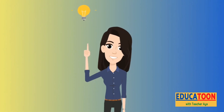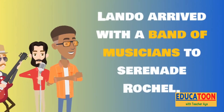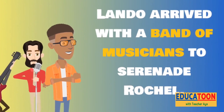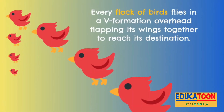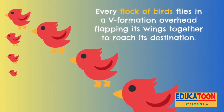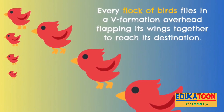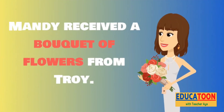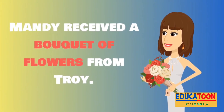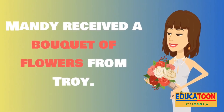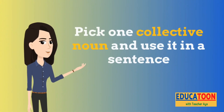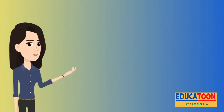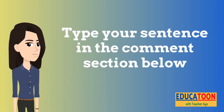Let's try to use some of them in a sentence. Every flock of birds flies in a V formation, overhead flapping its wings together to reach its destination — flock of birds. And Mandy received a bouquet of flowers from Troy — bouquet of flowers. Now it's your turn: pick one collective noun, or think of your own, and use it in a sentence. Type your sentence in the comment section below.